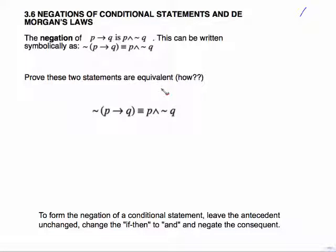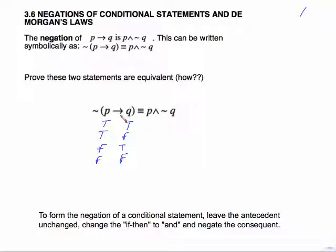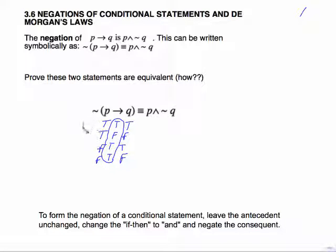I'm going to prove that these two statements are equivalent by doing a truth table. P is T, T, F, F. Q is T, F, T, F. We know for the conditional, the only time it is false is if the premise is true and the consequent is false. So the conditional gives us F, T, T, T. But I need to negate what's inside the parentheses, so I end up with false, true, false, false.